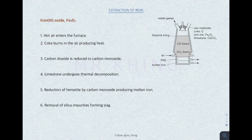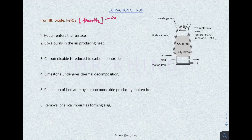The iron ore is what we call iron oxide, Fe2O3, and it is also called hematite. It is also added with a few raw materials, like coke — so-called carbon — and limestone, also called calcium carbonate.